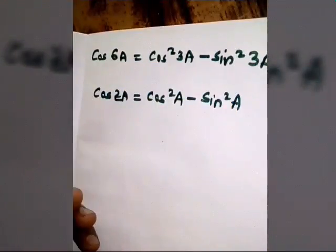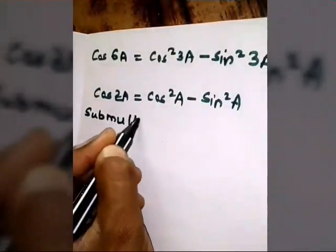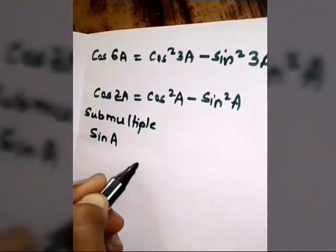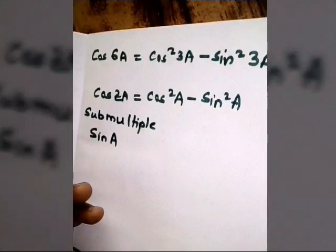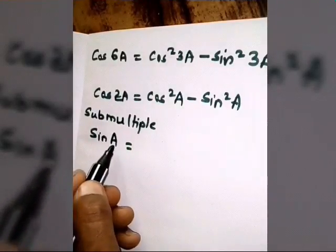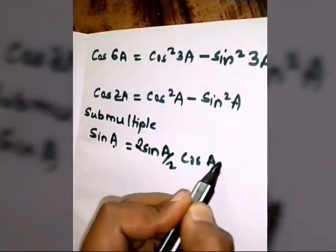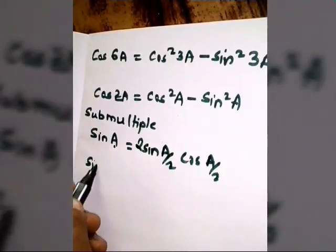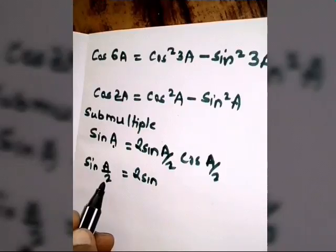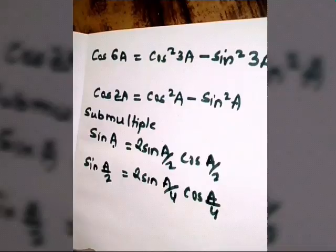Now let's talk about sub-multiples. If we have to find the formula of sin A, we start from sin 2A = 2 sin A cos A. The concept is the same: the right-hand side angle must be half of the original. So for sin A, the angle on the right-hand side is A/2, giving: sin A = 2 sin(A/2) cos(A/2). Similarly, for sin(A/2), we apply the same idea and get: sin(A/2) = 2 sin(A/4) cos(A/4).